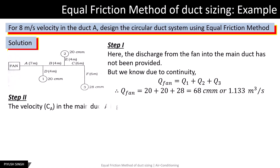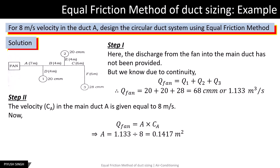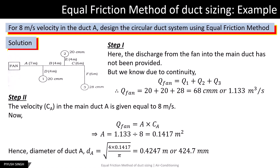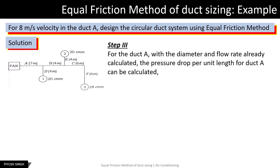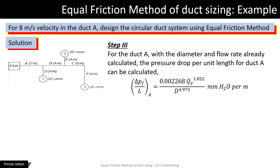In the second step, we calculate the diameter of the main duct using the given velocity. The velocity in the main duct is 8 meters per second, and Q_fan equals the area of cross-section of duct A multiplied by the flow velocity. Therefore, the cross-sectional area comes out to be 0.1417 square meters, and the diameter of duct A comes out to be 0.4247 meters or 424.7 millimeters. Next, using the diameter and flow rate of duct A, we calculate the frictional pressure drop per unit length, which comes out to be 0.2022 mmH₂O per meter.